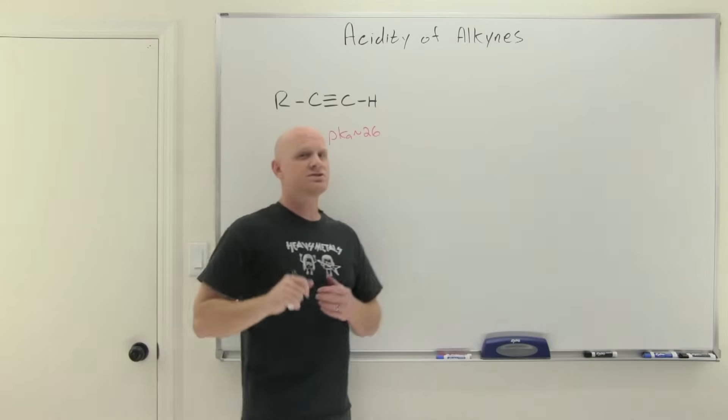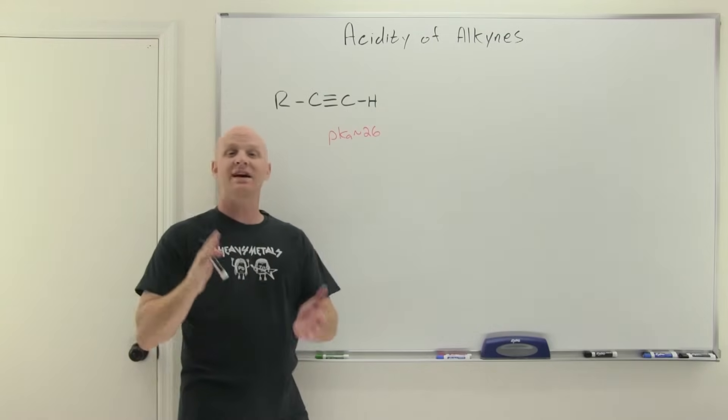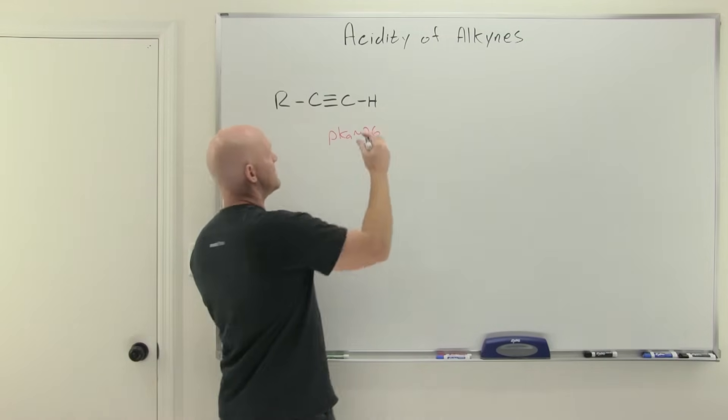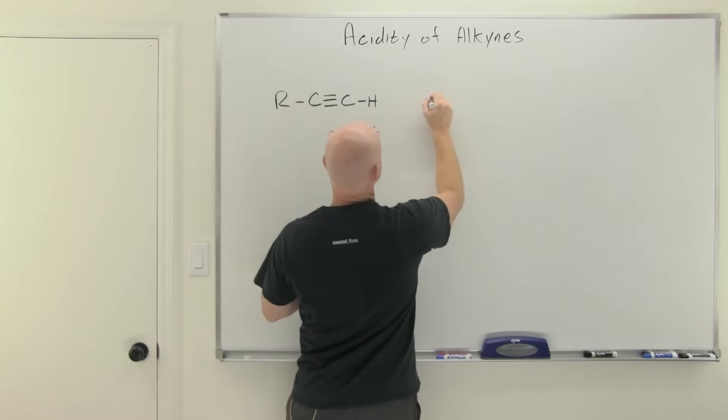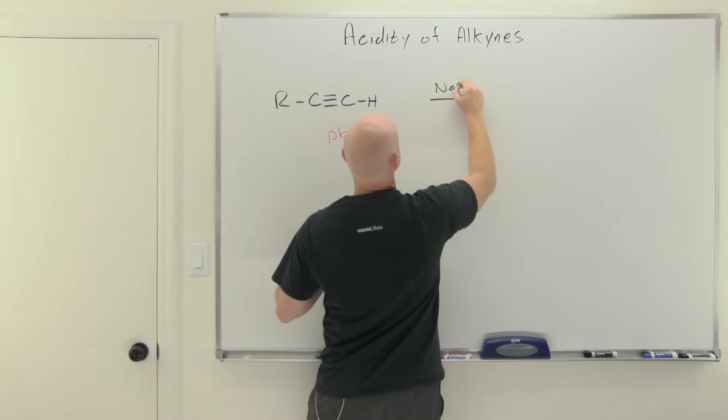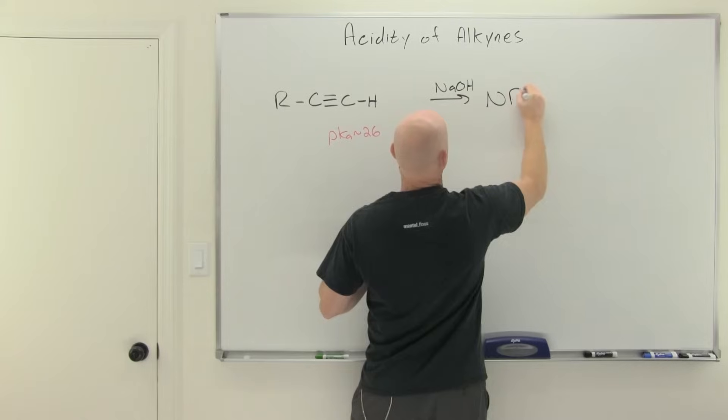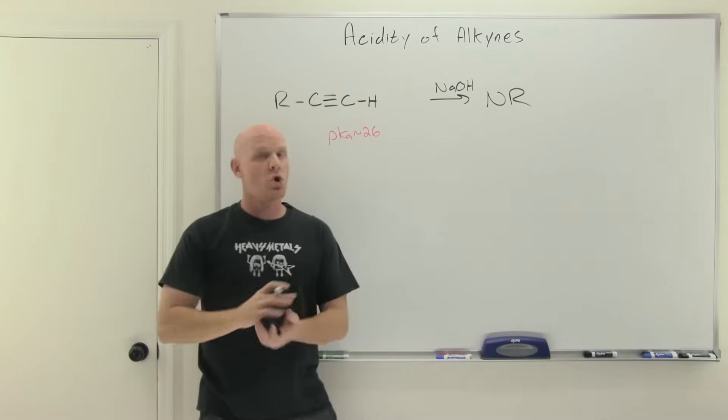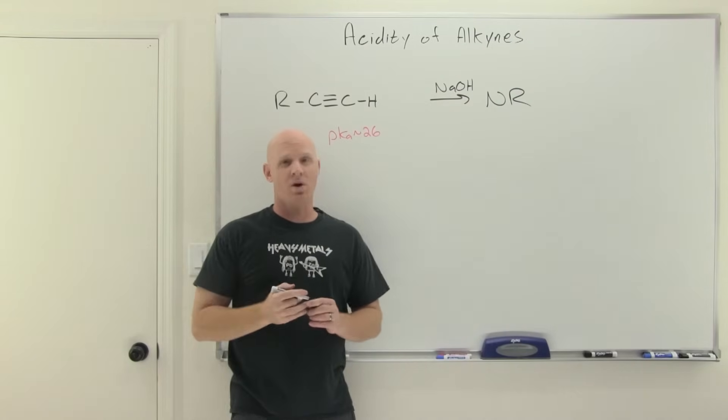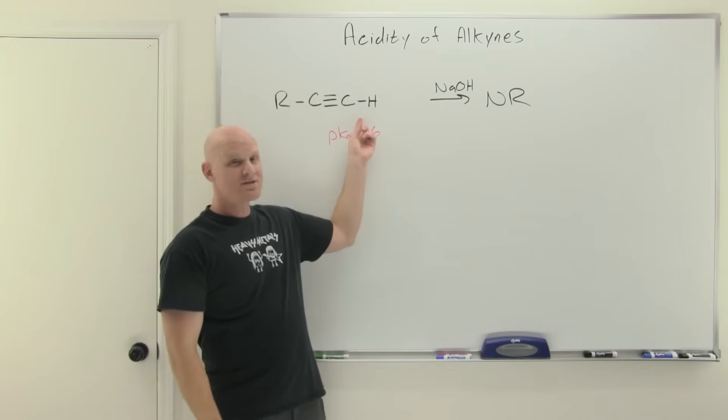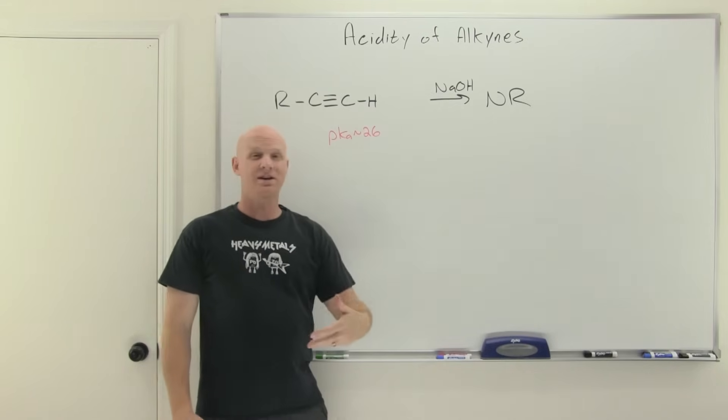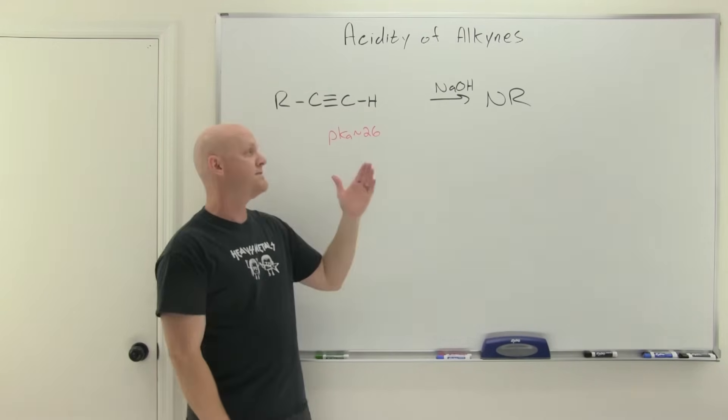So if we look, a classic strong base you learned about in gen chem would have been like sodium hydroxide. So if we add sodium hydroxide to this, all right NR here, you'll find that no reaction. It turns out it is not strong enough. So again this is not the most acidic thing in the world. Again much more so than an alkene or alkane but not very acidic.